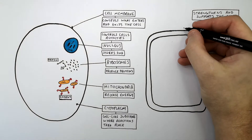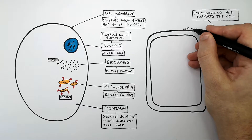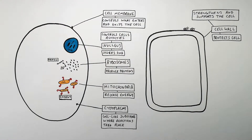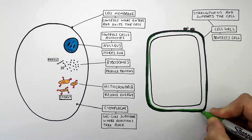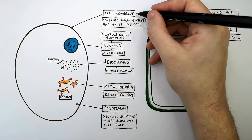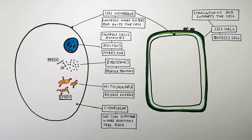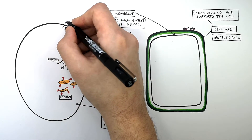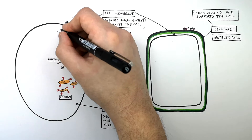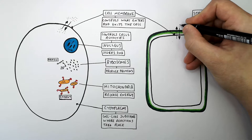So when we say that the cell wall protects the cell, these represent microorganisms that want to enter the cell, but because of the cell wall, many won't be able to, because the cell wall protects and strengthens and supports the cell. A plant cell has a cell membrane just like an animal cell, and the cell membrane controls what enters and exits the cell — substances entering and exiting in both the animal cell and the plant cell.